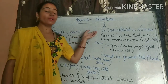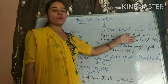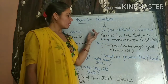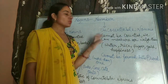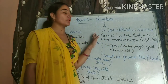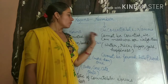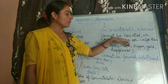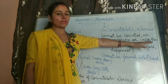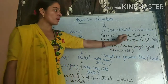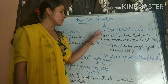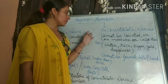Or jinko haam count nahi kar sakte hai — can't be counted — we can say uncountable noun. Jinko haam count nahi kar sakte hai, that is uncountable noun. We can only measure or weigh them. Hum unko sirf measure kar sakte hai, or weigh kar sakte hai. But we can't count them.